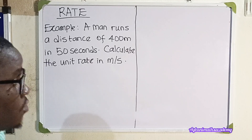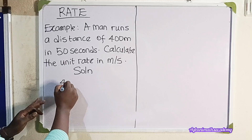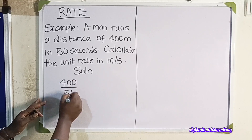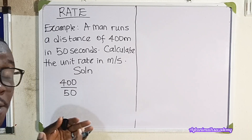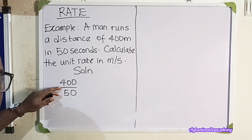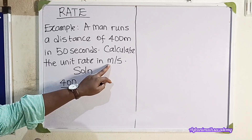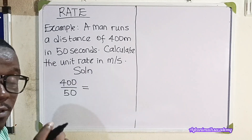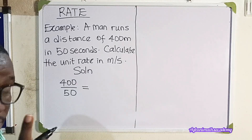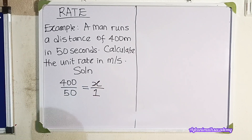This is a very simple question. The man covered 400 meters in 50 seconds. So we can say this is 400 meters per 50 seconds, because 'per' means division. It's equal to how many meters he is going to cover in one second. Remember, the unit rate is in meters per second, so the denominator must be one. That means we are looking for how many meters he covers in one second — we'll call it x. So next, we cross multiply: x multiplied by 50 gives us 50x.